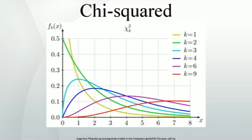Non-central chi-squared distribution. The non-central chi-squared distribution is obtained from the sum of the squares of independent Gaussian random variables having unit variance and non-zero means. Generalized chi-squared distribution. The generalized chi-squared distribution is obtained from the quadratic form ZᵀAZ where Z is a zero-mean Gaussian vector having an arbitrary covariance matrix, and A is an arbitrary matrix.